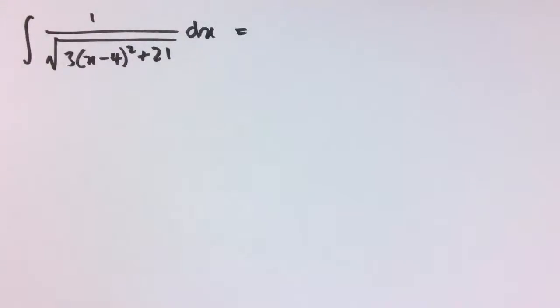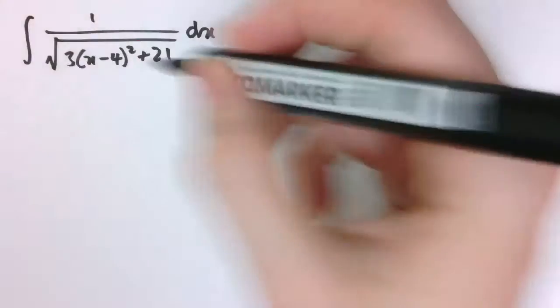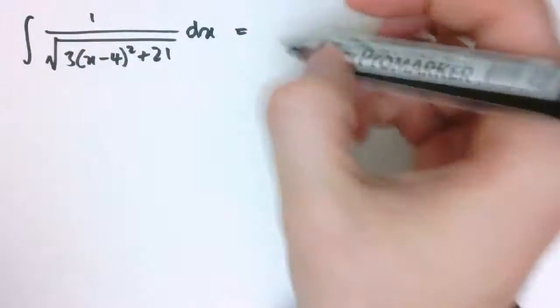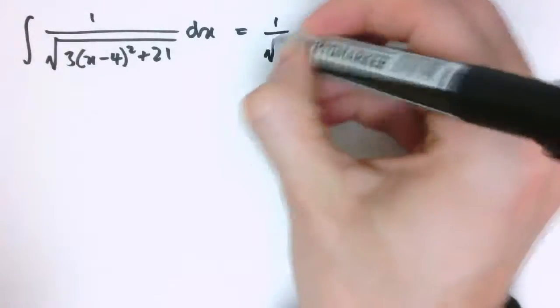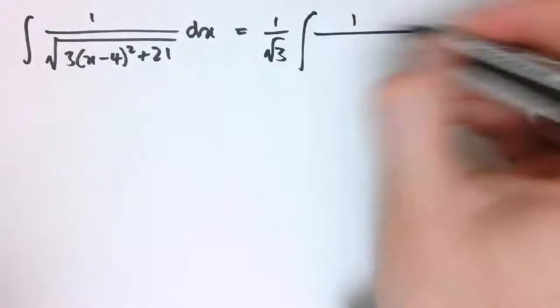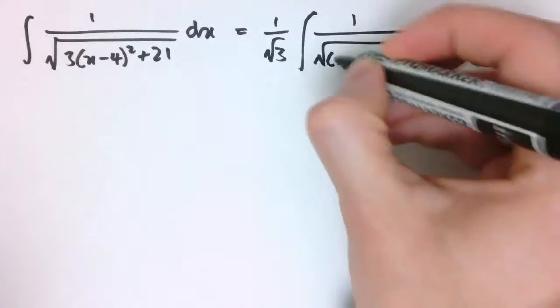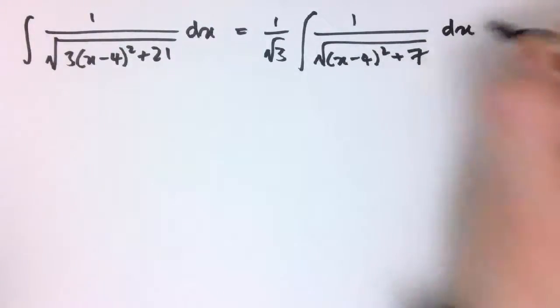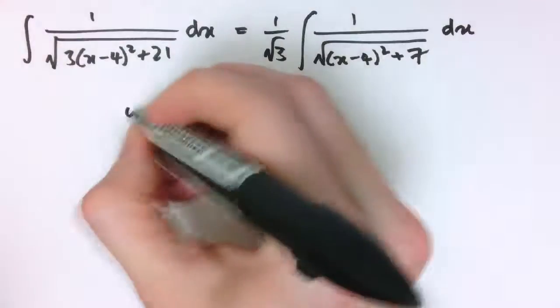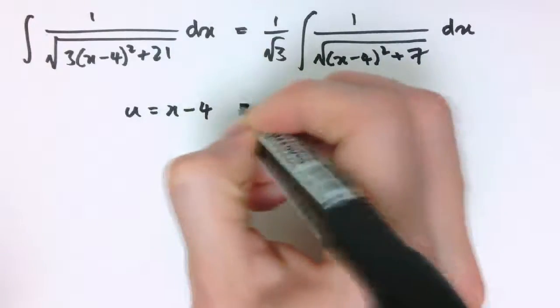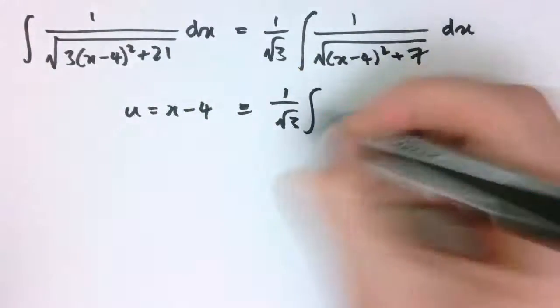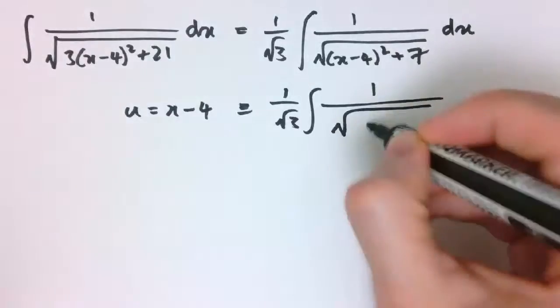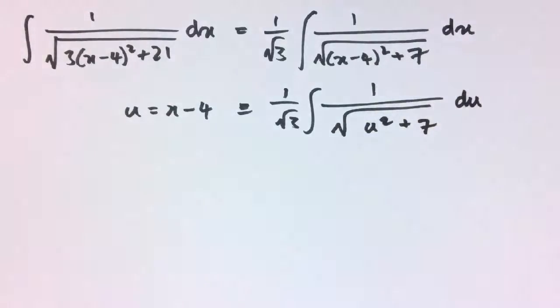This is my last example then: 1 over the square root of 3(x minus 4) squared plus 21 dx. Again it's already in completed square form. If it wasn't, we would put it into that form. I'm going to start by taking out the factor of 3, or the square root of 3 here, and writing the integral like this. If we substitute u equals x minus 4, that becomes 1 over root 3 times 1 over the square root of u squared plus 7 du.